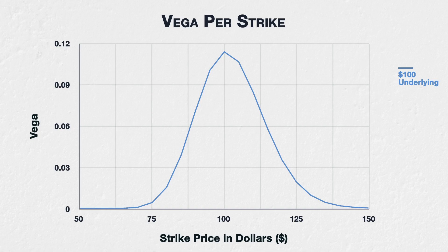This chart shows the vega for all options of a fictional asset, with a current price of $100, 30 days to expiry, and implied volatility of 40%. Strikes range from $50 to $150. Vega is the same for the call and put at each strike price, so I've just titled this chart 'option vega per strike.'